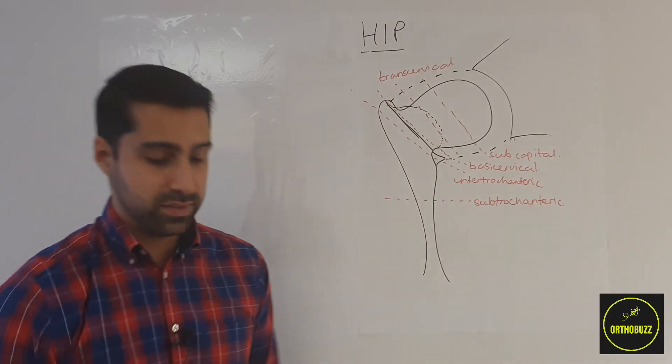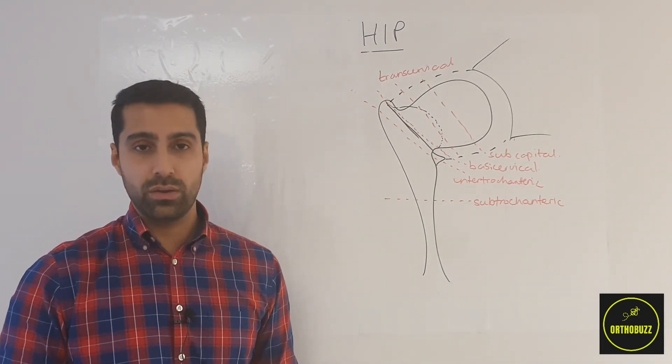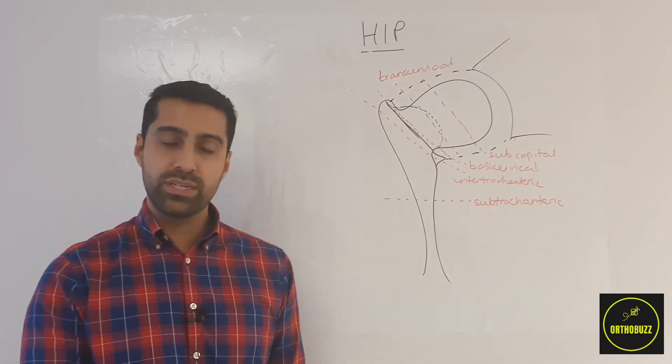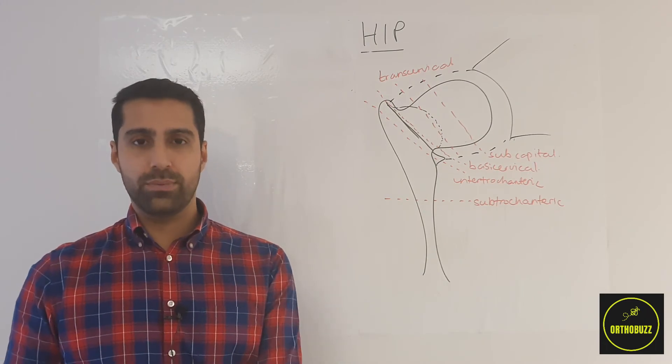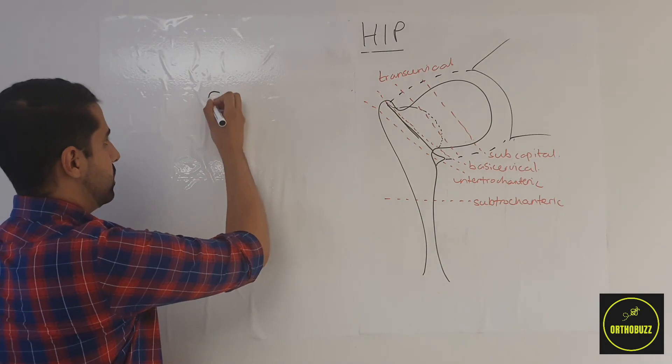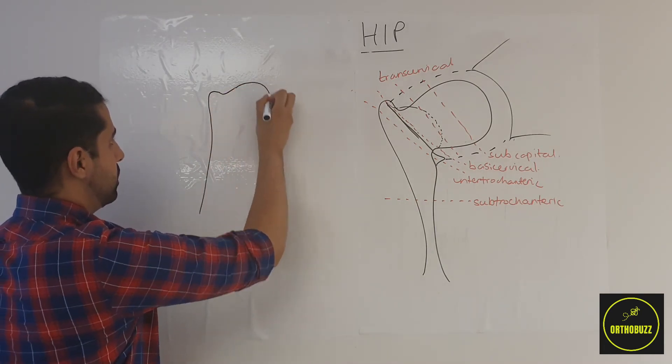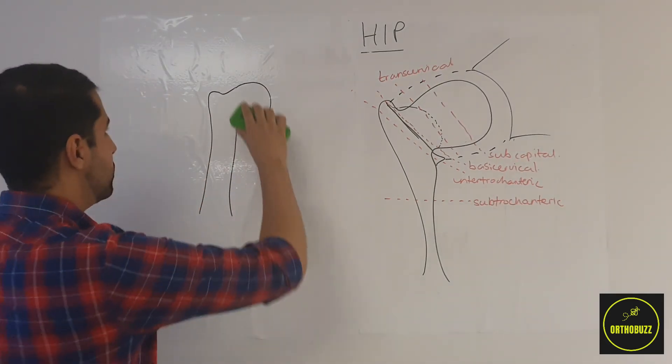So having understood this, we now need to consider what procedure the patient may undergo. As we've discussed, the options are fixation procedure for extracapsular fractures or a replacement procedure for intracapsular fractures. Very briefly, these may be a dynamic hip screw.